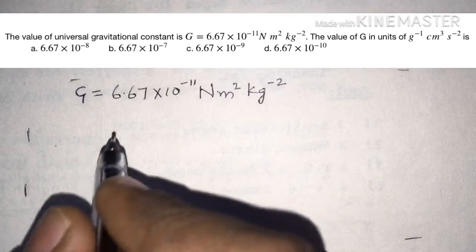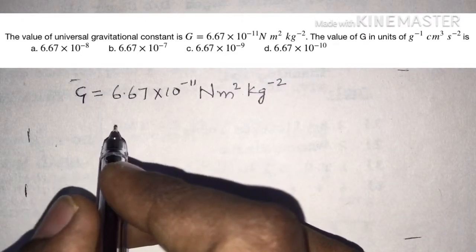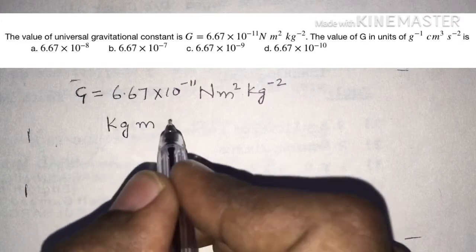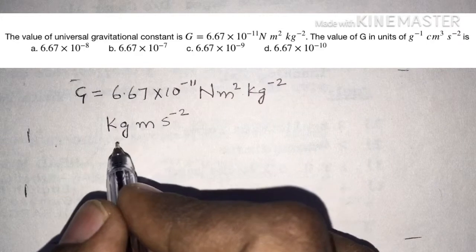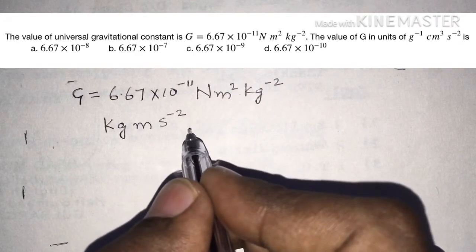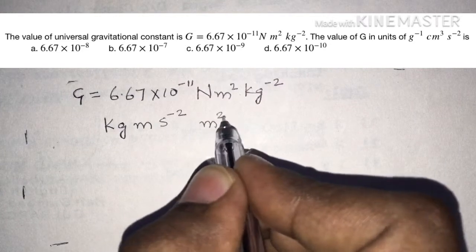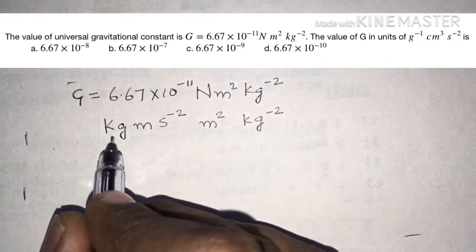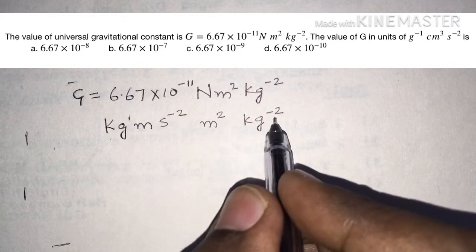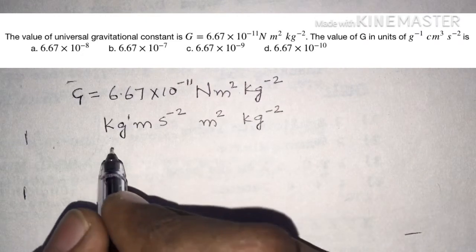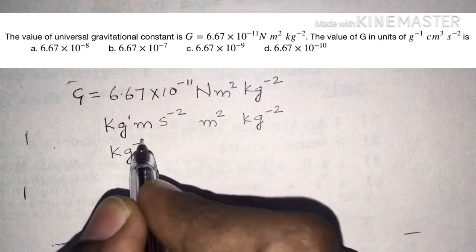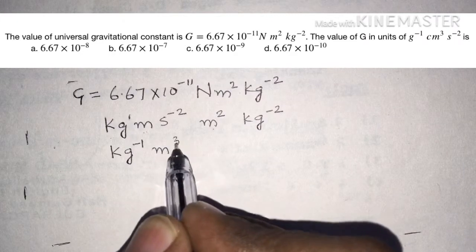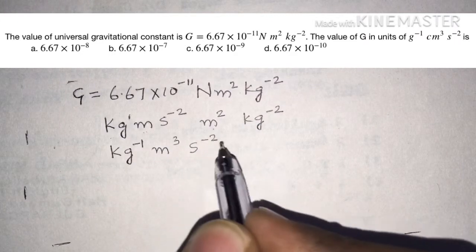We need to convert units from the SI system to the CGS system. Newton can be written as kg times meter per second square, since force equals mass times acceleration. Overall, kilogram appears with power 1 and power minus 2, giving kilogram power minus 1. Similarly, meter power 1 and meter power 2 gives meter power 3, followed by second square, which is common to all unit systems.